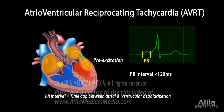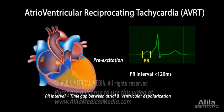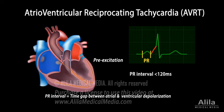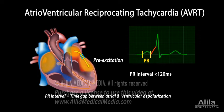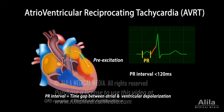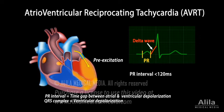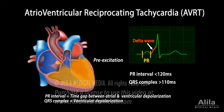Because part of the ventricles depolarize earlier, ventricular depolarization develops in a more gradual fashion and lasts longer, resulting in a slurring slow rise of the initial portion of the QRS complex, known as a delta wave, and QRS prolongation.